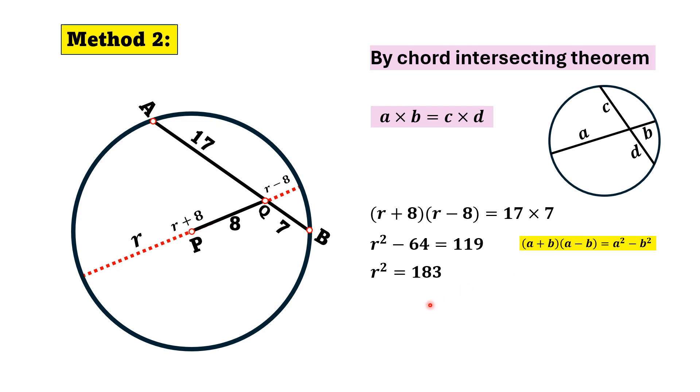And from here, if we take this 64 on the right and add to 119, we will get R square is equal to 183, and then we have again area of circle is equal to pi R square, that is equal to 183 pi square units. That is the answer. Thank you for watching.